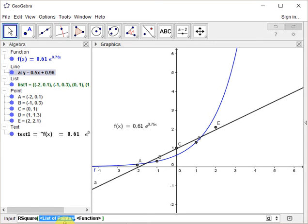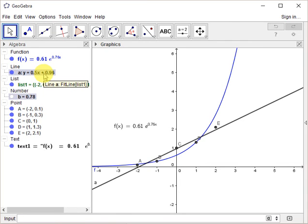...what it wants is a list of points, list 1. And it wants to compare the data set to one of the functions. So you could call either f, or it didn't really make that as a function, but we can correct that. We can make it compare to f anyway. So it comes up here as b equals 0.78.